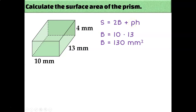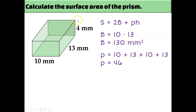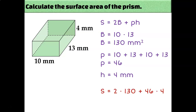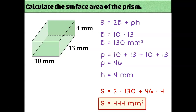I also need P, which is the perimeter of the base. To find the perimeter of a rectangle, I add up all four sides: 10 plus 13 plus 10 plus 13, giving a total perimeter of 46 millimeters. The last element I need is the height of the prism, which is 4 — that's the length connecting the two 10 by 13 bases. Now that I know B, P, and H, I can plug those numbers into my surface area formula and get an answer of 444 square millimeters.